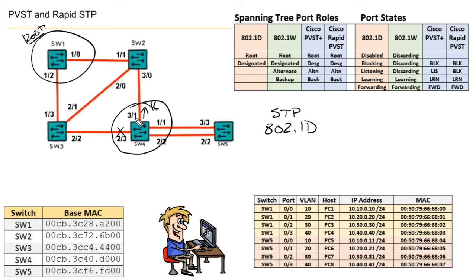In Rapid Spanning Tree, every designated switch sends BPDUs on its own timer — every two seconds independently. The benefit is those BPDUs act as hello messages. If a switch running Rapid Spanning Tree hasn't seen hellos from a neighbor, it assumes there's a problem, without relying solely on the root triggering hello messages. That's just one of the changes with Rapid Spanning Tree.